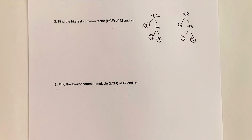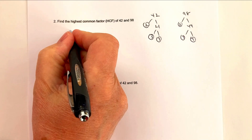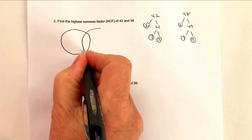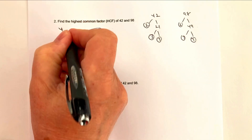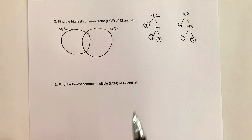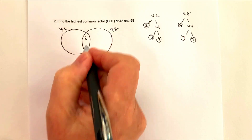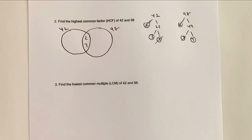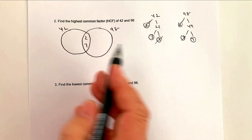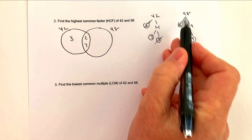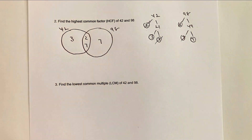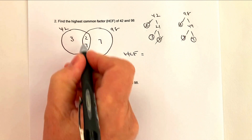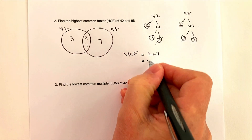A common way to find the highest common factor is to use a Venn diagram. We have 42 and 98. Looking at their prime factors, the factors common to both are 2 and 7 — these go in the middle. Anything left goes into its respective circle: 42 has a leftover 3, and 98 has a leftover 7. The HCF is the product of the numbers in the middle: 2 × 7 = 14.